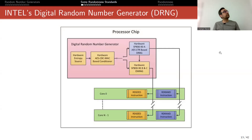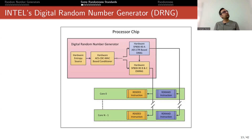We briefly mentioned where the random number generator is. The question is: in practice, what can I do to produce random numbers?